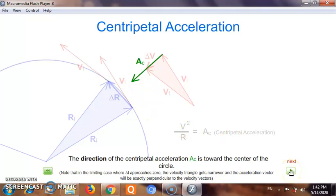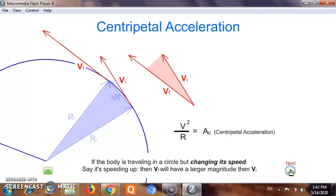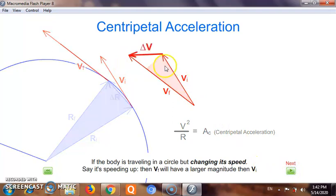When vi and vf were equal in magnitude because the motion was UCM, whereas if the motion is not UCM and the speed is increasing constantly, we will have vf greater than vi. In that case, my direction of delta v will be somewhere in this direction here.